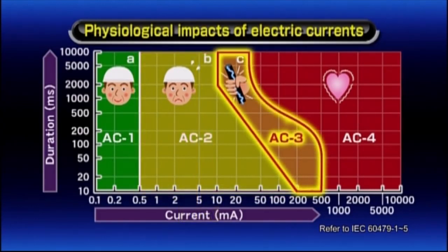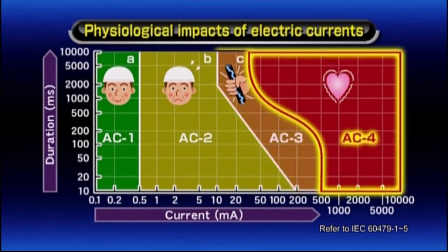At level AC 3, your muscles contract, preventing you from disengaging from the current without assistance. Prolonged exposure takes you to level AC 4, where life-threatening ventricular fibrillation occurs.